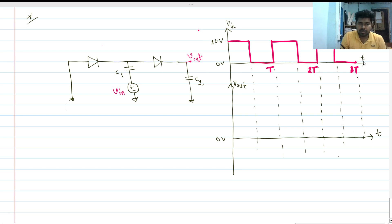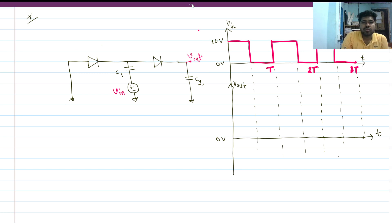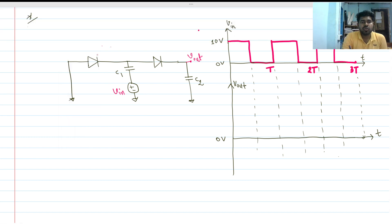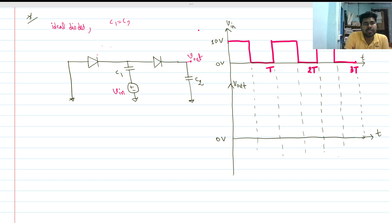Hi everyone, welcome to this session. Today we will solve this interview question. In this circuit, there are two ideal diodes and two capacitors C1 and C2. Let C1 equals C2 equals C. The initial condition of these two capacitors is zero — meaning initially both capacitors are uncharged.